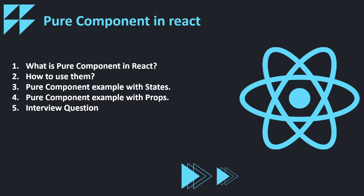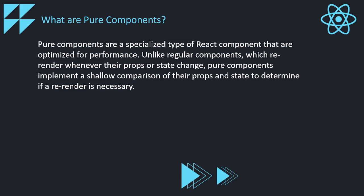Now let's start understanding what is a pure component in React. Pure components are a specialized type of React component that are optimized for performance. Unlike regular components, which re-render whenever their props or state changes, pure components implement a shallow comparison of their props and state to determine if a re-render is necessary. We have used normal components a lot — whenever we update the value of a state, there is a re-render that occurs in the DOM.